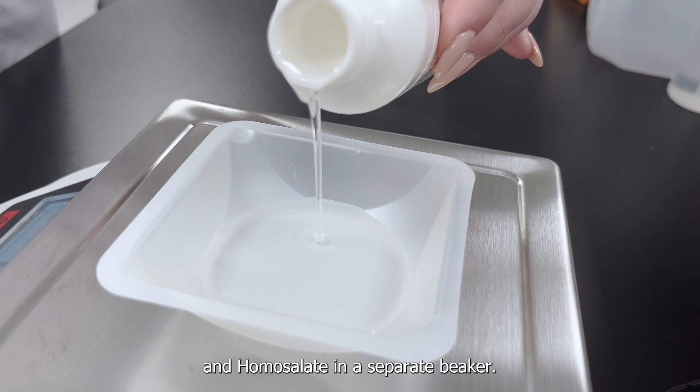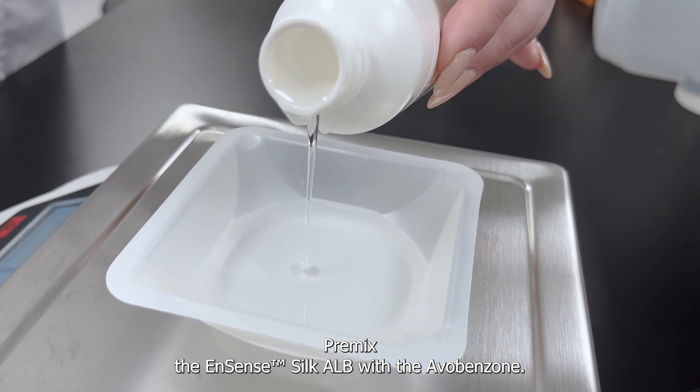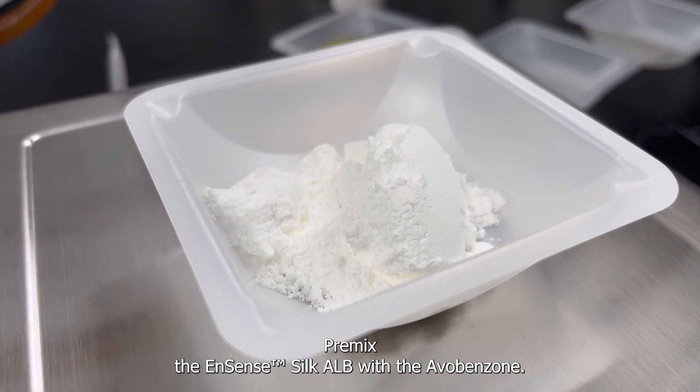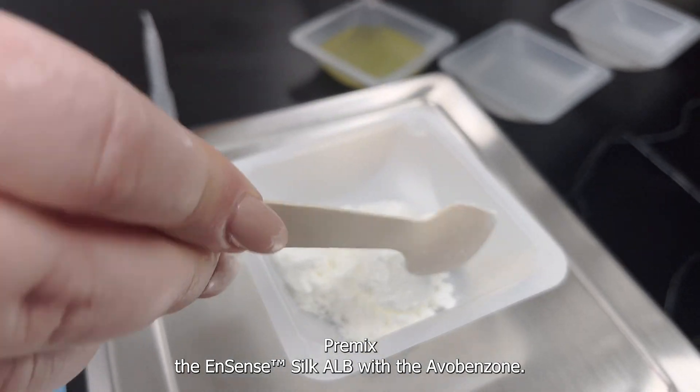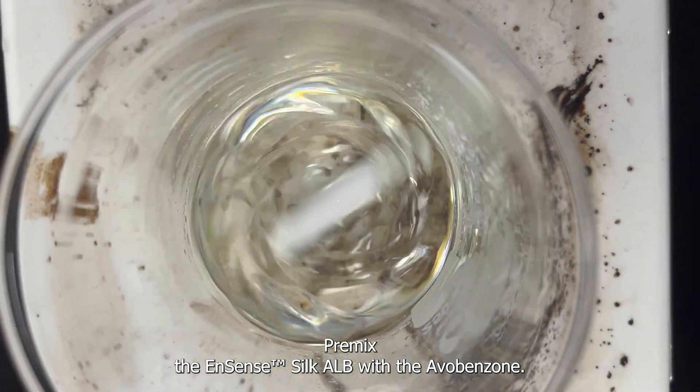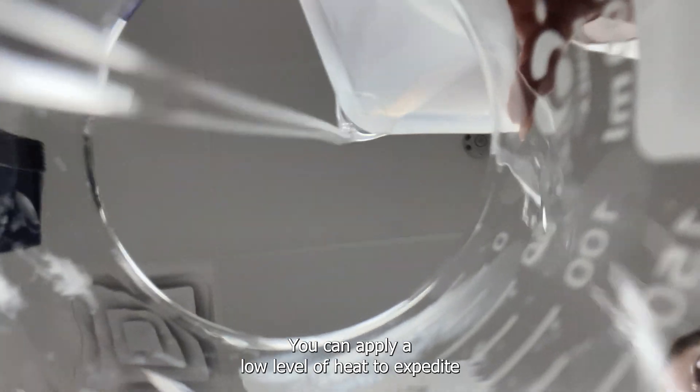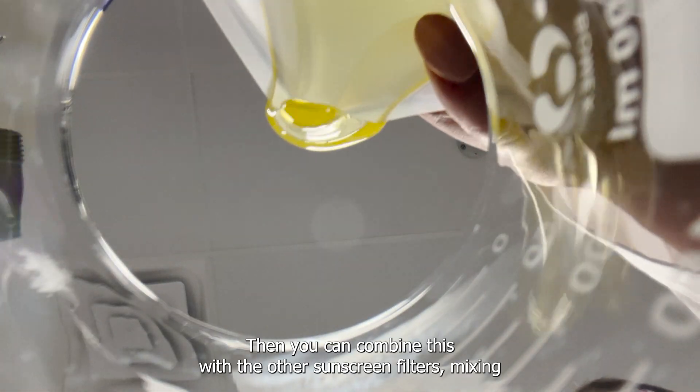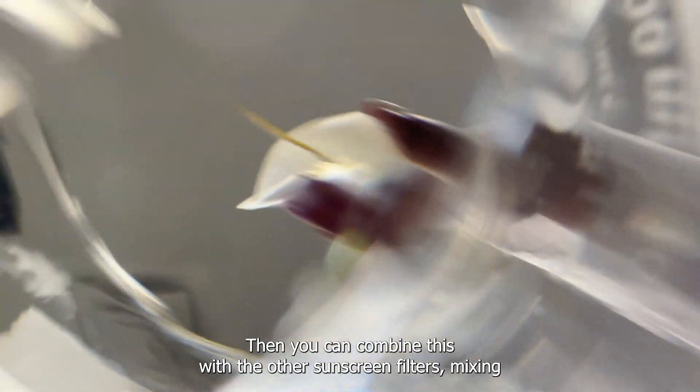In a separate beaker premix the Ensense Silk ALB with the avobenzone. You can apply a low level of heat to expedite. Once the avobenzone is fully dissolved in the alkyl benzoate, then you can combine this with the other sunscreen filters. Mixing until uniform.